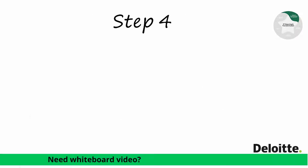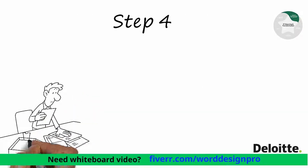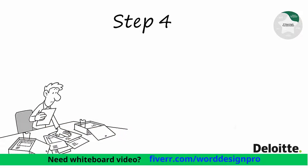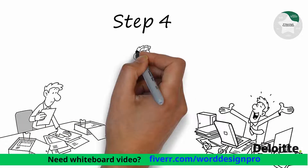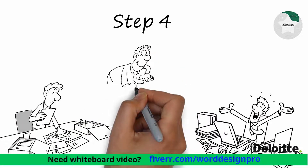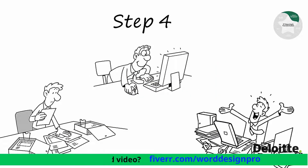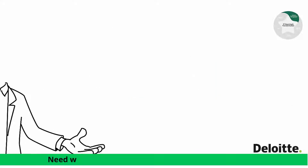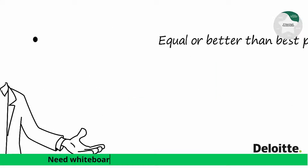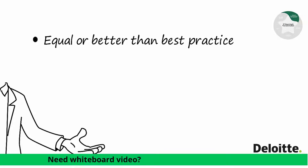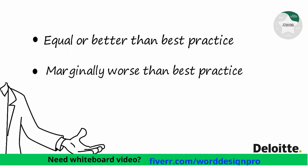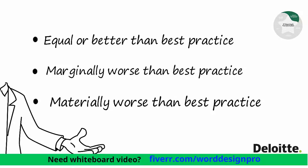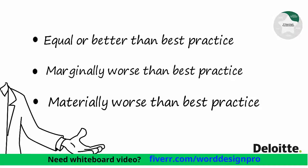Step 4 involves assigning an RAG status to each of the contractual components. This is achieved by assessing the contract terms against the best practice examples detailed in the tool. Each category is assessed as equal or better than best practice, marginally worse than best practice, or materially worse than best practice.